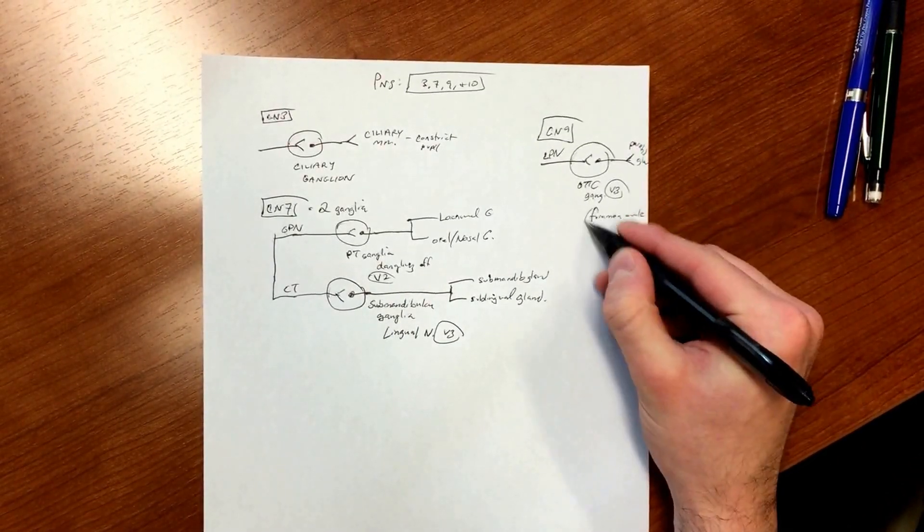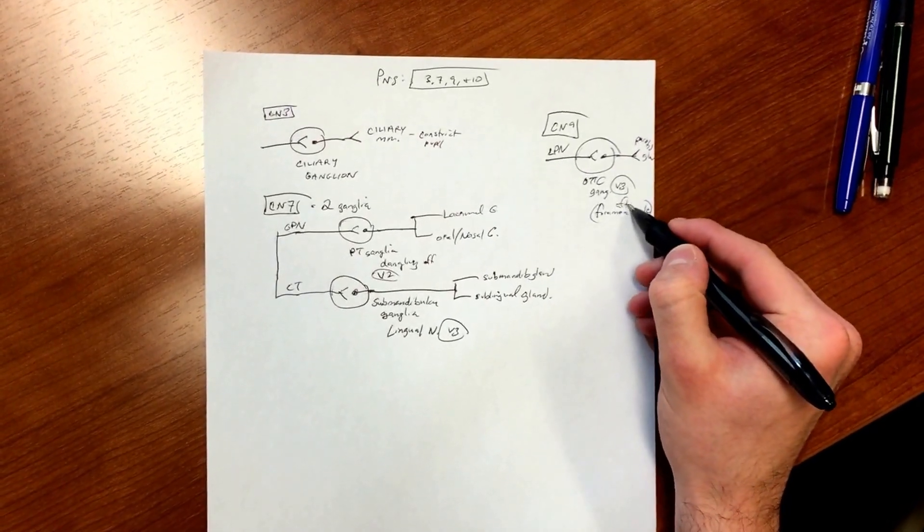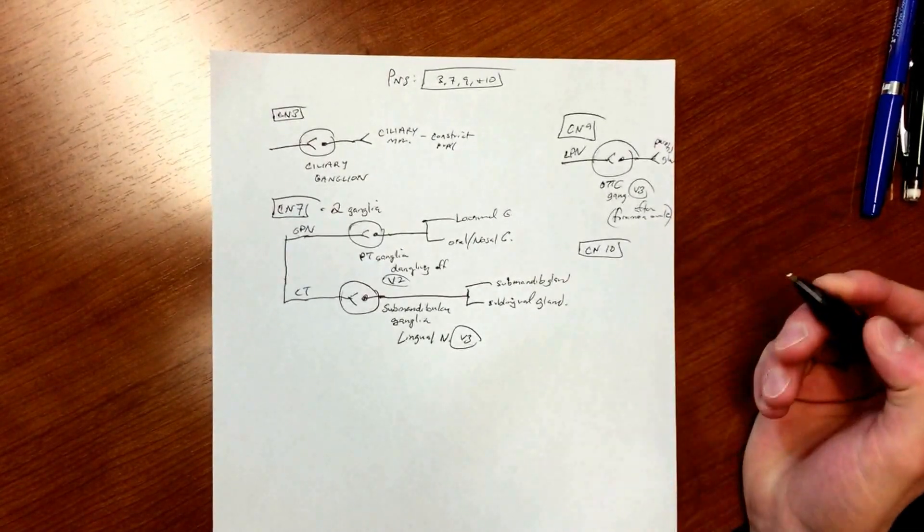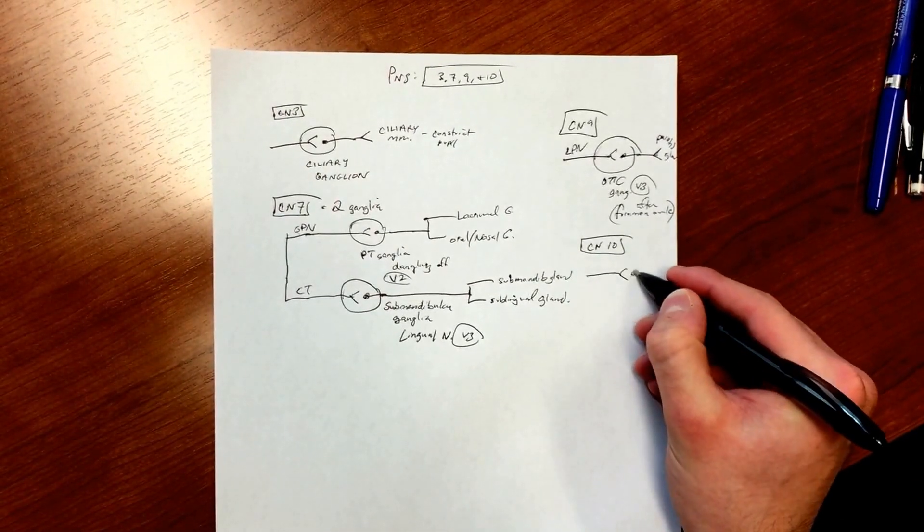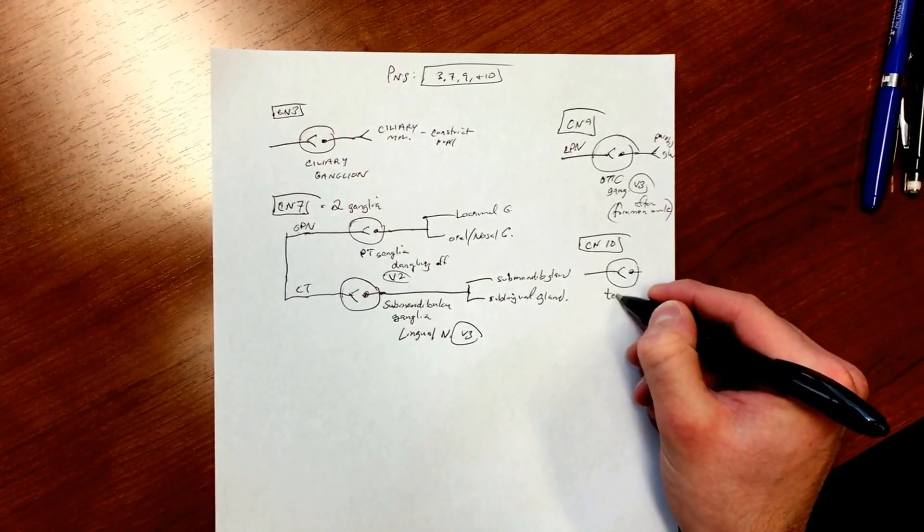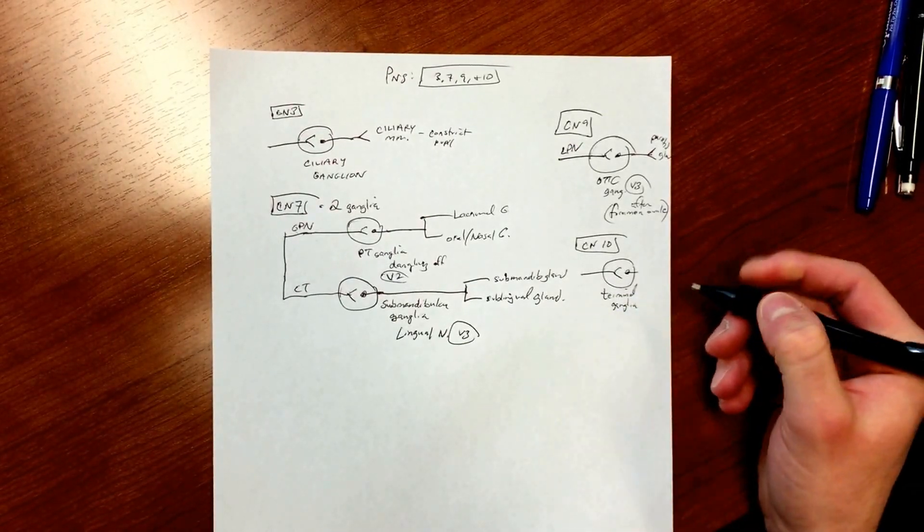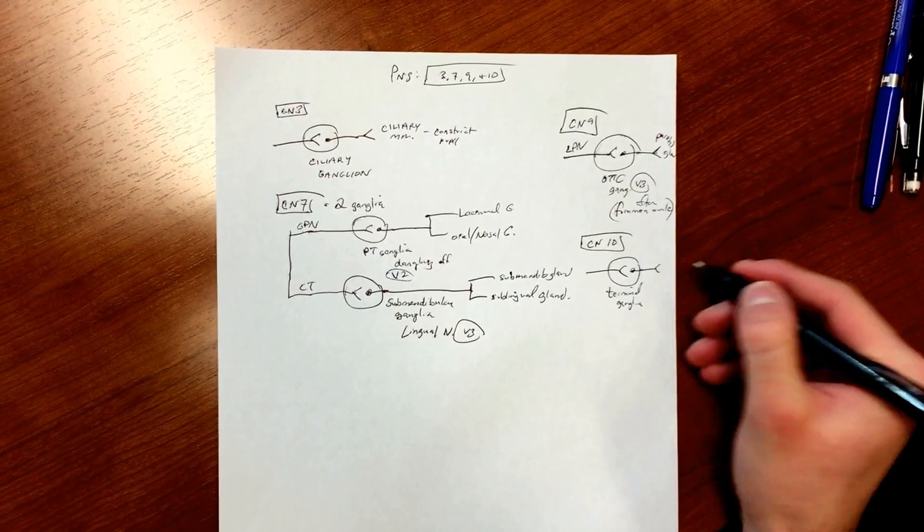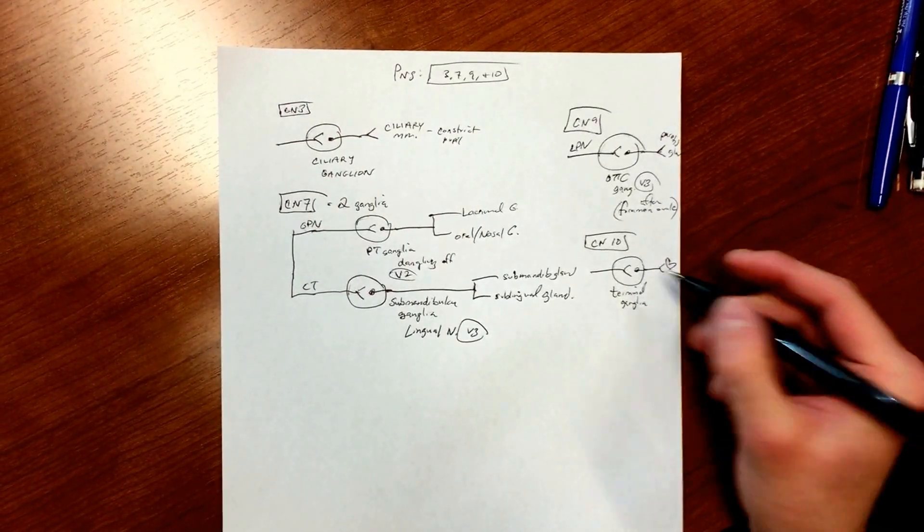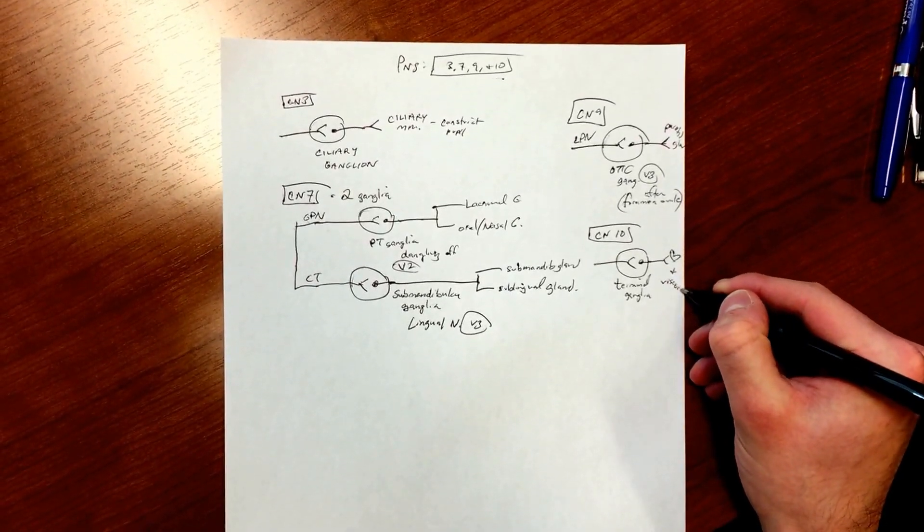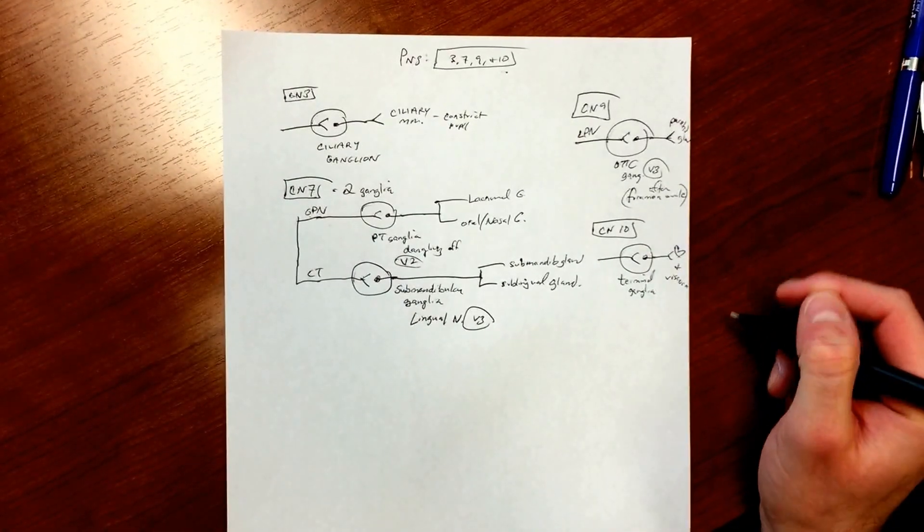And then last one is cranial nerve 10. Cranial nerve 10, very general, but you have fibers going to different terminal ganglia. So you're going tons of different places like your heart - parasympathetic so slowing down the heart - and a ton of viscera. It's not the best drawing ever but...